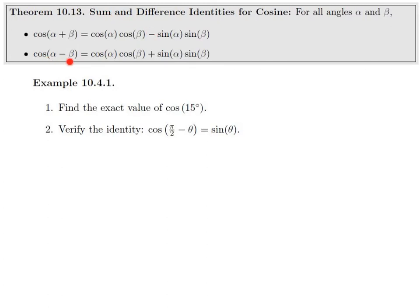Cosine of alpha minus beta is cosine cosine, opposite symbol, sine sine. So the pattern for the sum and difference for cosines is cos cos, opposite symbol, sine sine.